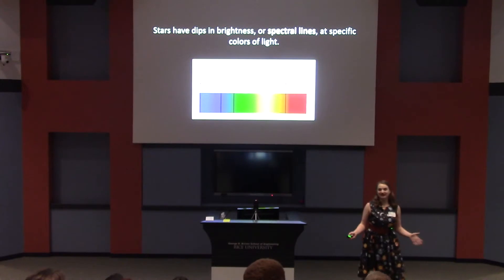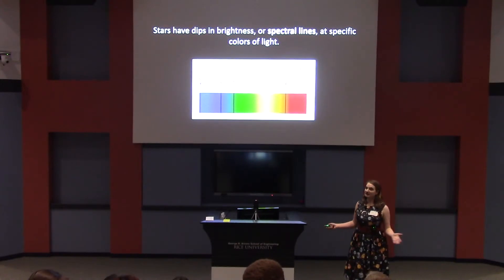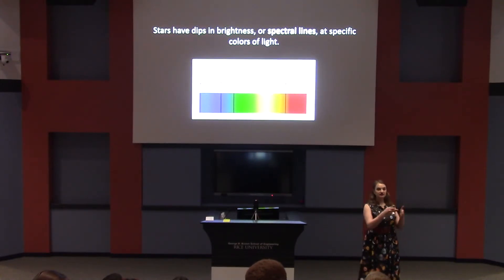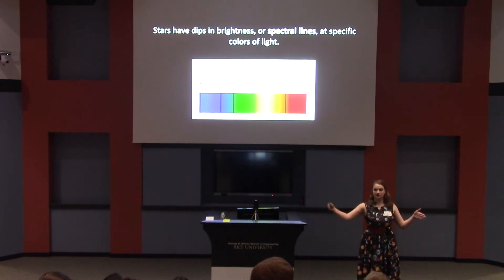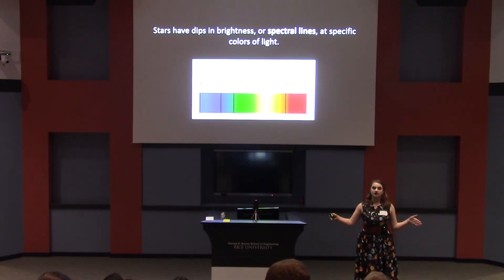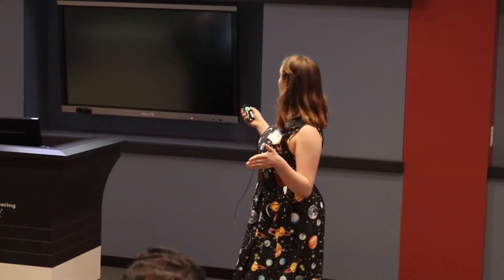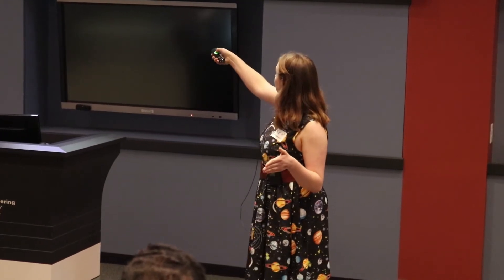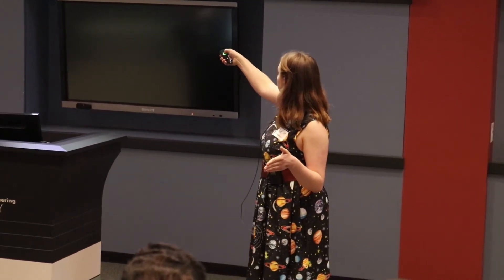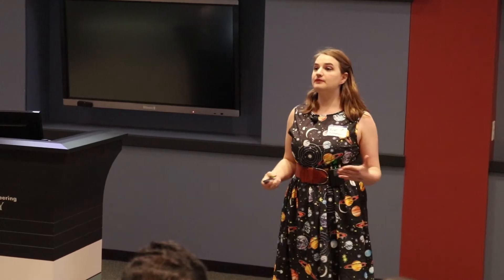But once you have your data, what do you do with it? Well, if you look at the light that's produced at every color that a star produces, you'll notice that there are these dips in certain places. We call those spectral lines. You're looking at this red line here — each of these dips is a spectral line. And these can vary both in how deep they are and how wide they are, and that actually encodes a lot of information about the star.